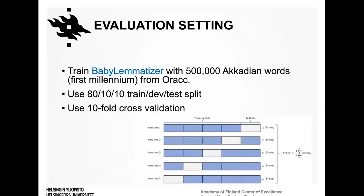We evaluate the model using 500,000 Akkadian words from first-millennium texts in ORACC, using 80% for training and splitting the remainder equally into development and test sets, with tenfold cross-validation to make the evaluation more reliable.